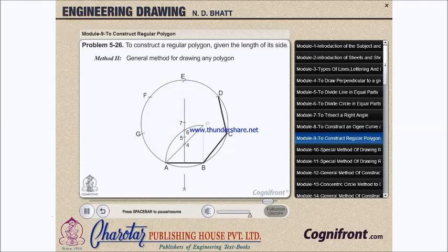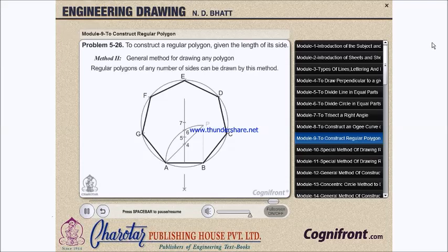Draw lines BC, CD, etc., and complete the heptagon. Regular polygons of any number of sides can be drawn by this method.